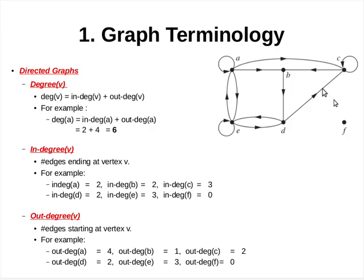The edges of a directed graph are directed edges. Hence the degree of a vertex is redefined as the sum of the in-degree and out-degree of vertex V. The in-degree of a vertex V is the number of edges ending at vertex V. For the given directed graph, the in-degree of vertex A is equal to 2, which represents the directed edges from A to itself and from E to A. Both these edges are ending at vertex A.